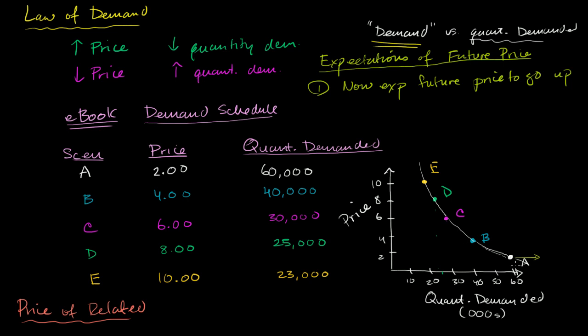At $4, more people will want to buy it because they think it's going to go up. At any of these price points, because now the expectations have gone from being neutral to now expecting prices to go up, it will shift the entire curve to the right. So this will shift the entire curve to the right.